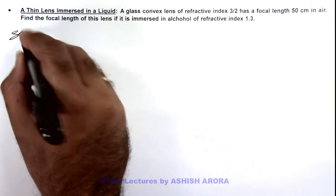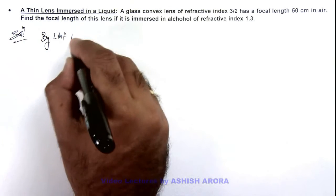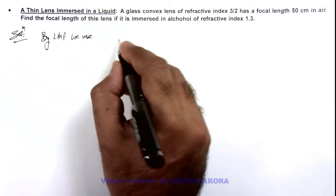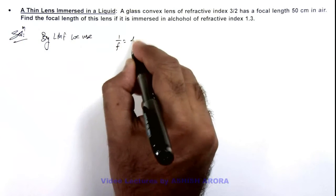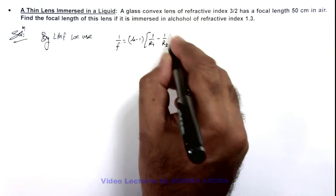Here in solution, we can directly write that by lens maker's formula, the relation we have is 1/f = (μ - 1)(1/r₁ - 1/r₂).